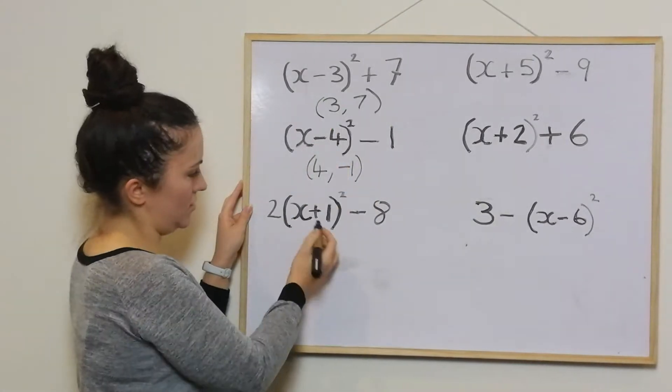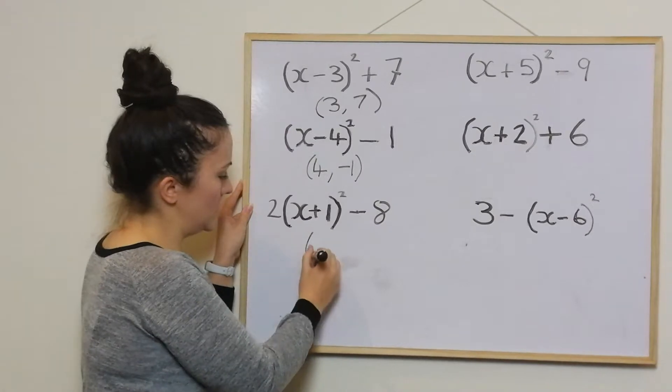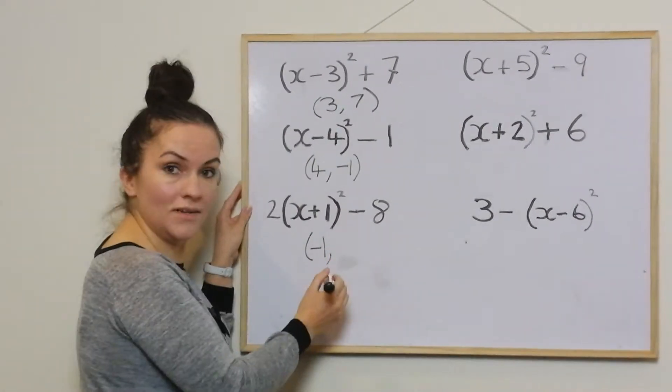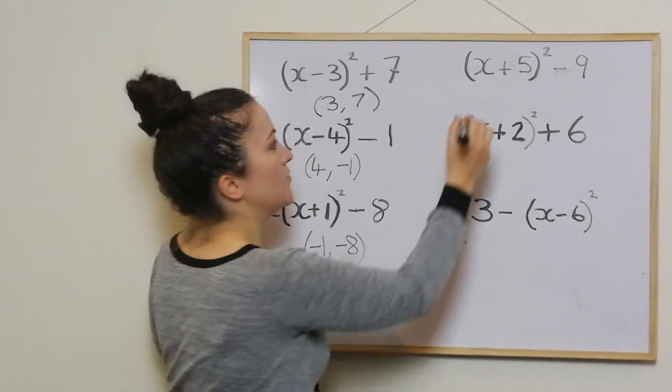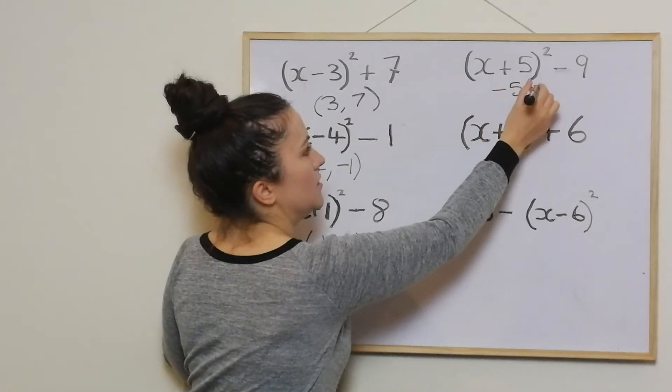So the one inside the bracket changes, outside stays. This is positive so this becomes negative 1 and then negative 8. This one negative 5 negative 9.